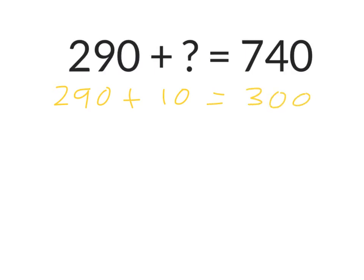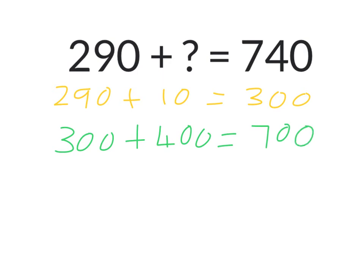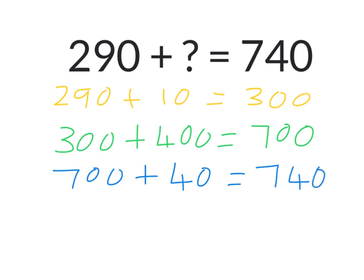Now I need to get all the way up to 700, so I'm going to go 300 plus another 400 will get me to 700. But I need to get up to 740, so then I need to go 700 plus 40 to get me to my 740.